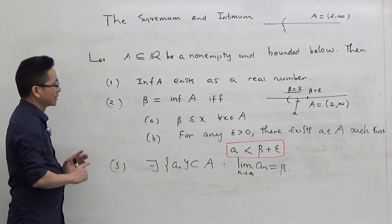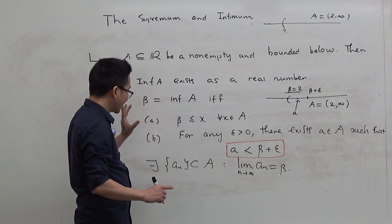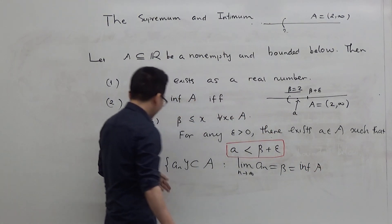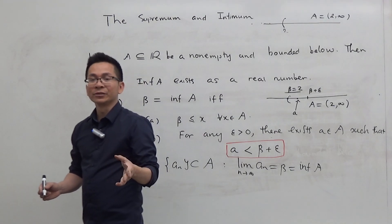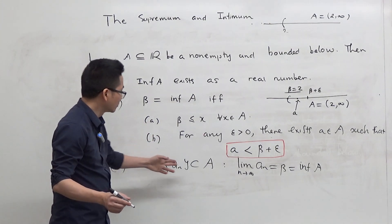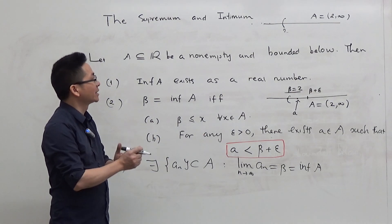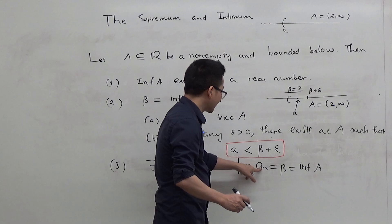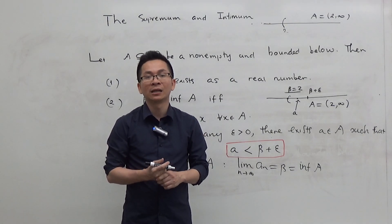The third property says that if beta is the infimum of the set A, then we can find a sequence in A that converges to beta. Similarly to the case of the supremum, this property also holds when A is not bounded below. So in general, if you have a non-empty subset of the real line, you can always find a sequence in that set such that the limit of a_n as n approaches infinity equals the infimum of the set, or the greatest lower bound of the set.